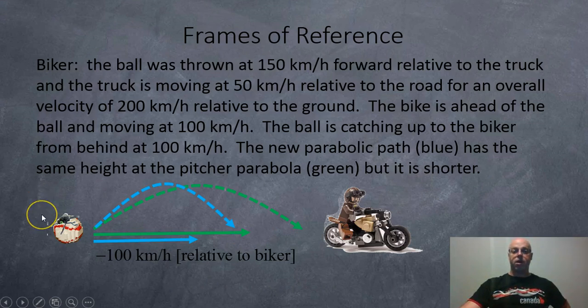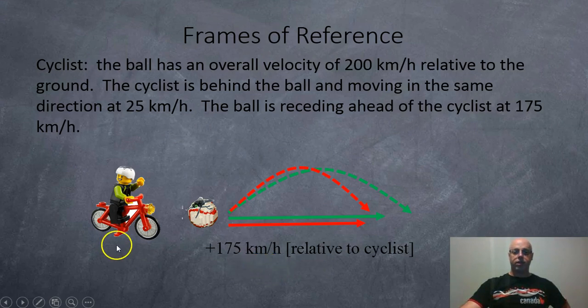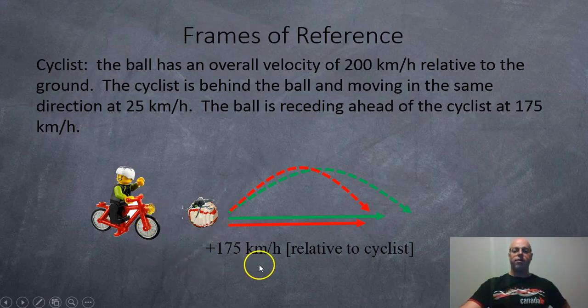The biker was moving away at 100 km per hour, but the ball is moving at 200 km per hour relative to the road. So all together, that means the ball is actually catching up to the biker at 100 km per hour. The cyclist was trying to catch up at 25 km per hour, but the ball is moving forward at 200 km per hour relative to the road. So now the ball is escaping or receding from the cyclist at 175 km per hour.